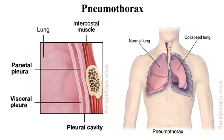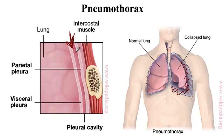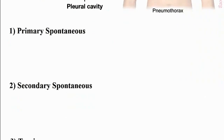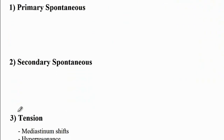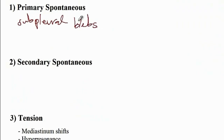Pneumothorax involves air entering the pleural cavity. Since air enters, it allows the lungs to recoil on themselves, because the lung has a tendency to recoil inward. Having air or fluid inside the pleural cavity causes dissociation between the chest wall and the lungs, so the lungs recoil on themselves. There are two forms: spontaneous, from rupture of subpleural blebs, and tension pneumothorax.